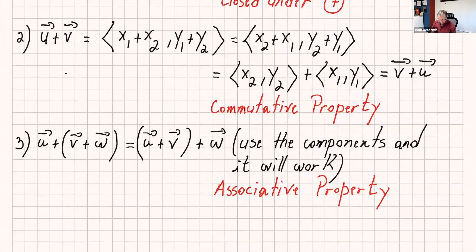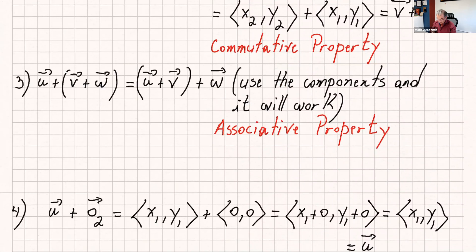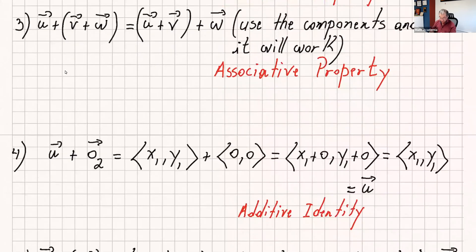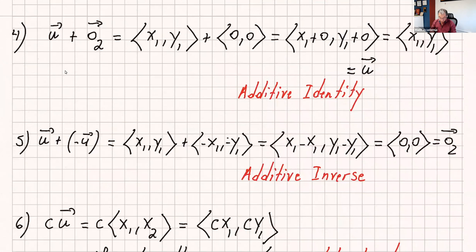For the associative property, you can use the components in the same way — it will work, and I have that in my last video, so try it yourself. For u plus the zero vector, that's (x1, y1) plus (0, 0), and you get the same vector u back, so the additive identity works. And u plus (minus u) — use the components and you get the zero vector, so we do have an additive inverse.